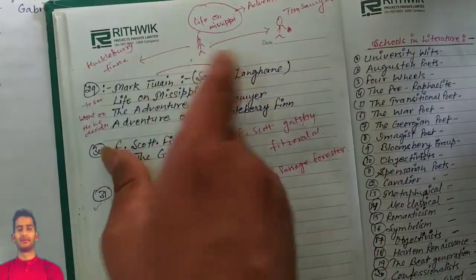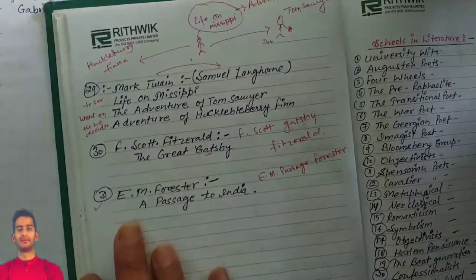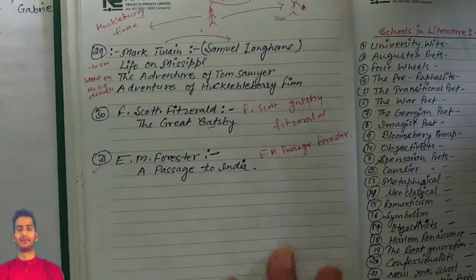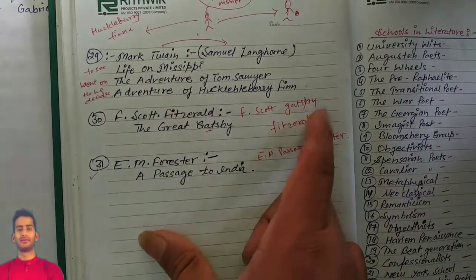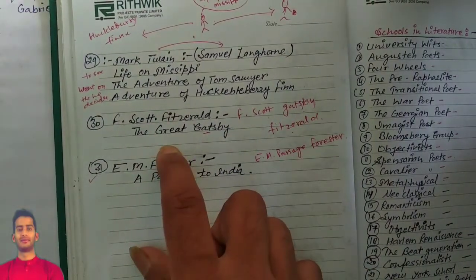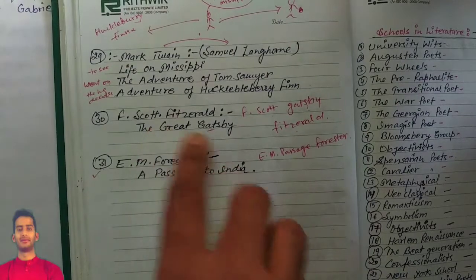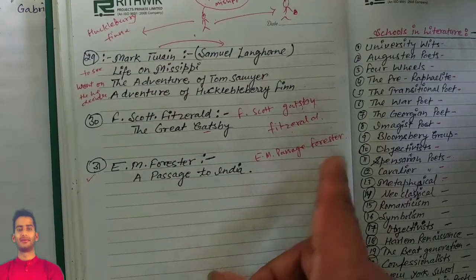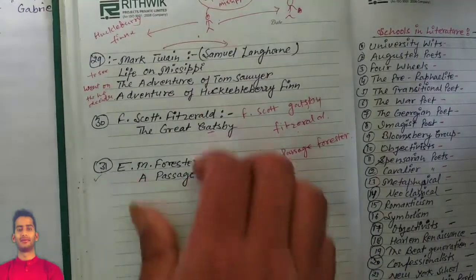F. Scott Fitzgerald, F. Scott Fitzgerald gets The Great Gatsby. E.M. Forster, A Passage to India. E.M. Forster passes to India. Everybody knows these two works are easy to remember.